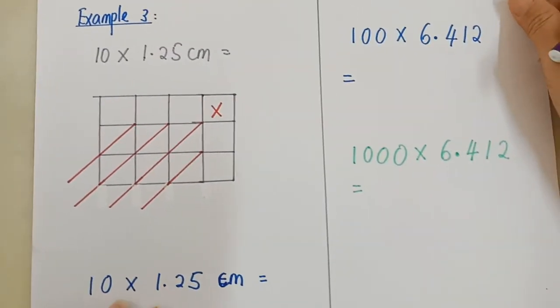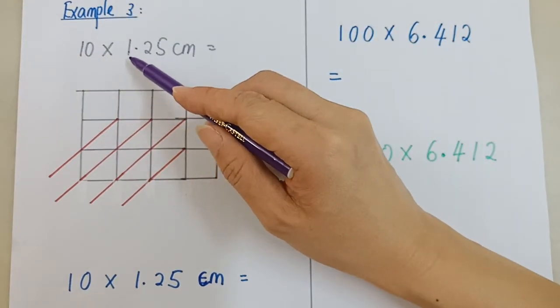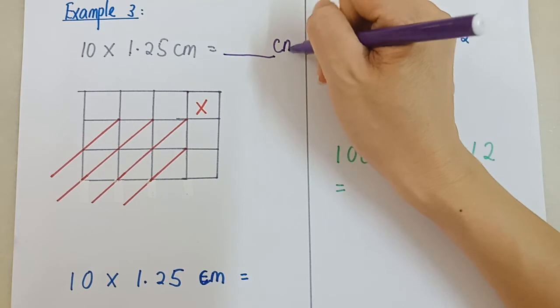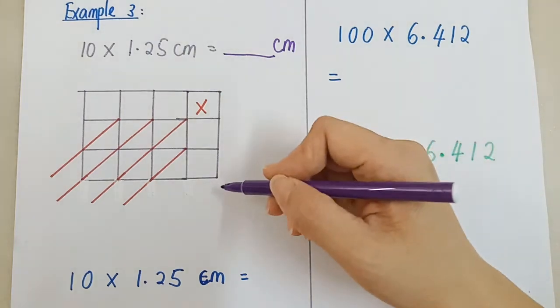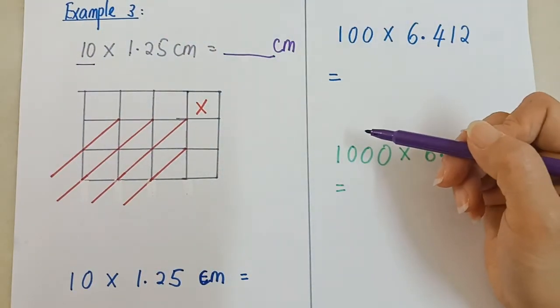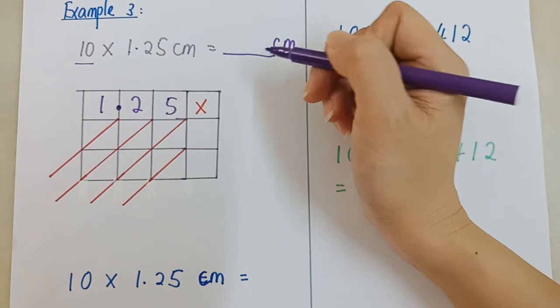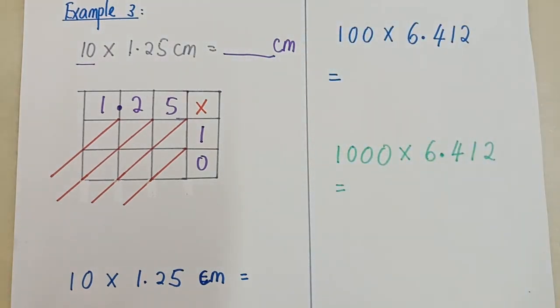All right. Next one. Example 3. This one, 10 times 1.25 cm. So later, remember to put a cm behind. Ada cm di belakang. Madam tunjuk dengan lattice. Sebab darab dengan 2 digit, kan? Yang banyak digit di atas. 1.25 di atas. Times 10. 1, 0.